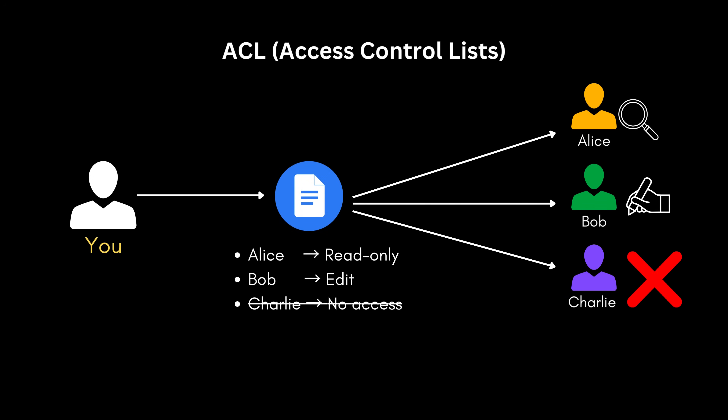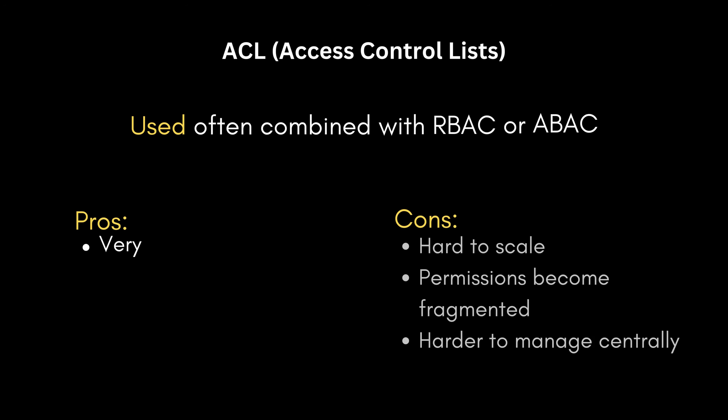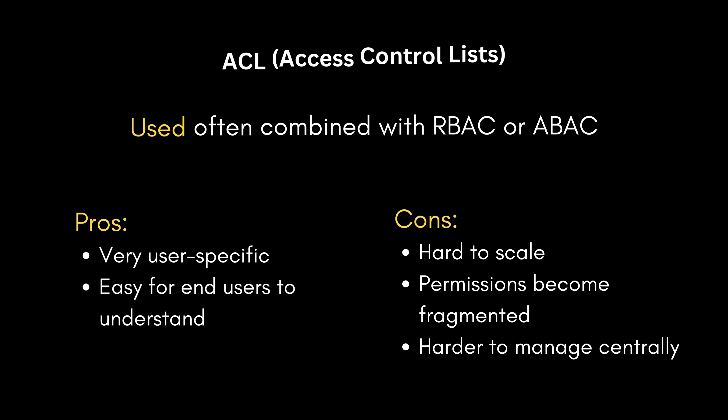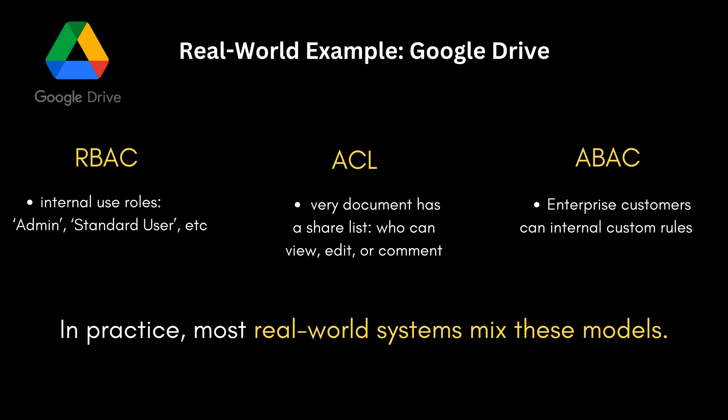The third model is Access Control Lists. Here, permissions are attached directly to the resource itself, not to roles or attributes. Think of Google Docs: you share a document with Alice and set her permission to read-only, you share it with Bob and grant him edit access, and Charlie — who isn't on the list — gets no access. The advantage is that it's very user-specific and intuitive for sharing. The downside is that it doesn't scale well. This is why most large companies combine ACLs with RBAC or ABAC to balance user-friendly sharing with enterprise-level scalability.